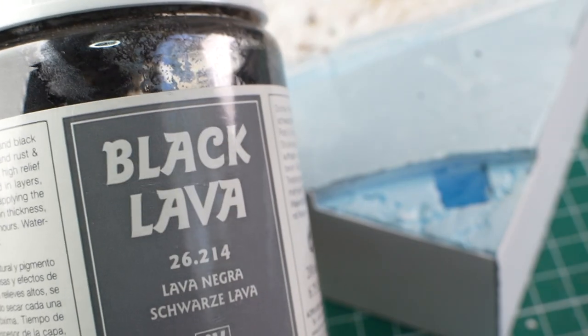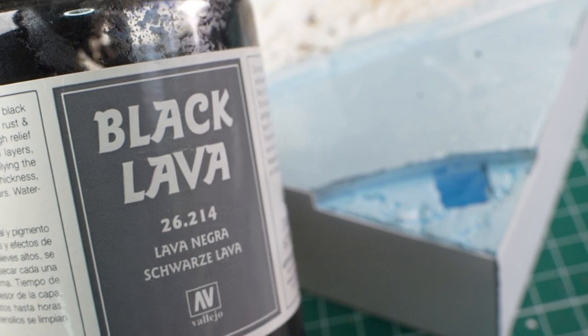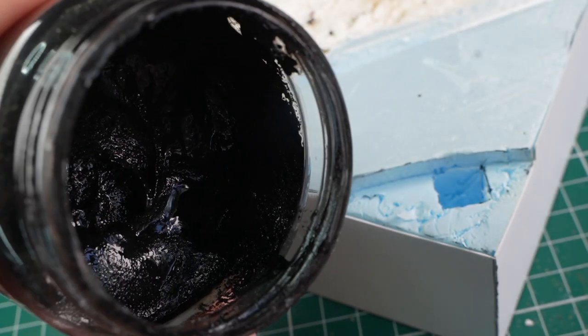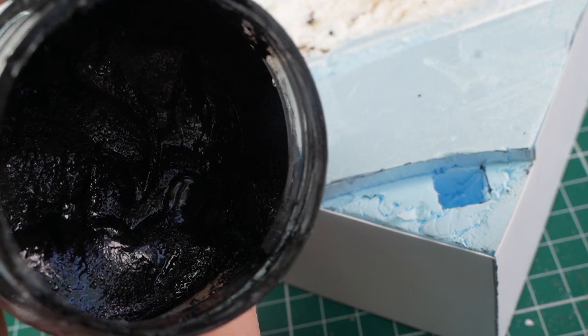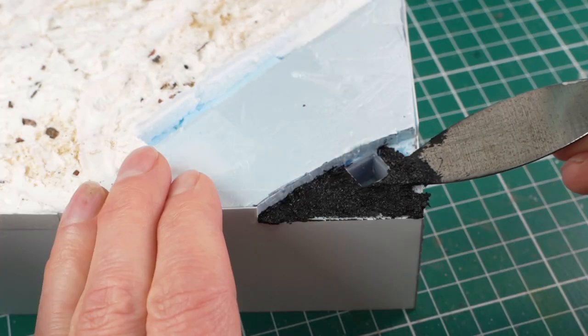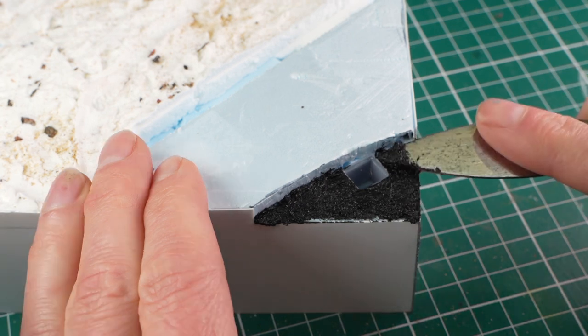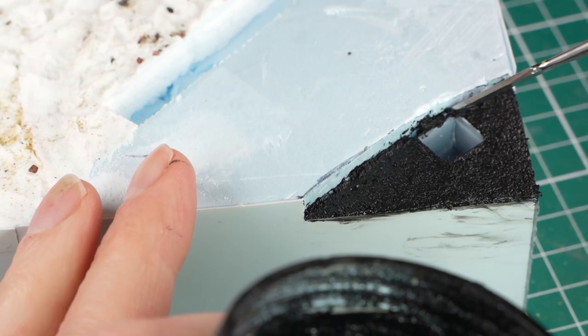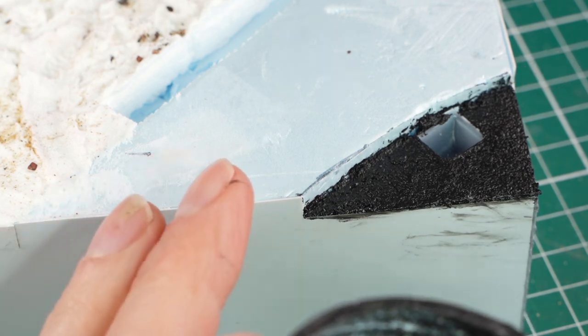Time to make some asphalt. For that I've used this Vallejo Black Lava which is basically thick acrylic paint with fine sand. But it is very easy to work up and gives a great base for later stages, because tarmac is never black.